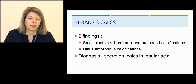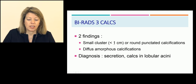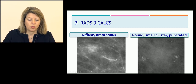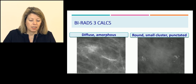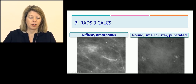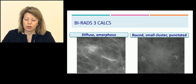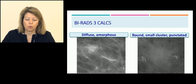Be careful — only two entities can be classified as BI-RADS 3 today: small clusters lower than 1 cm with round, punctated calcifications, and diffuse amorphous calcifications. These are usually benign and correspond to secretions or calcification clusters in lobular acini. An example of diffuse amorphous calcification clusters — all looking the same, with a benign shape: round, homogeneous, no pleomorphism, no variation in size. Small punctated clusters can also be categorized as BI-RADS 3 — located in a small area, round, less than 1 cm.